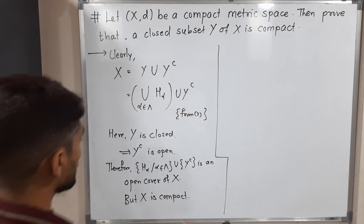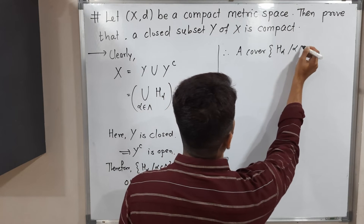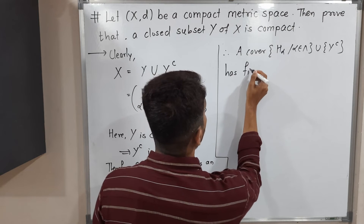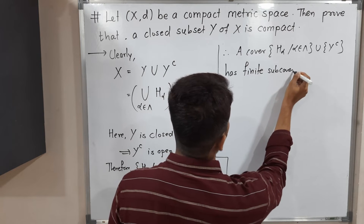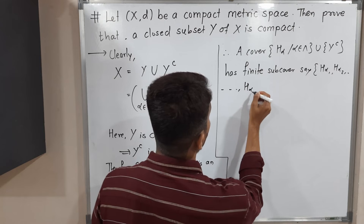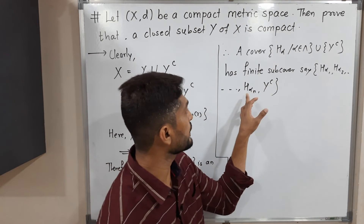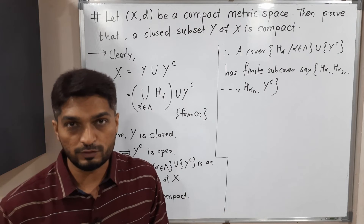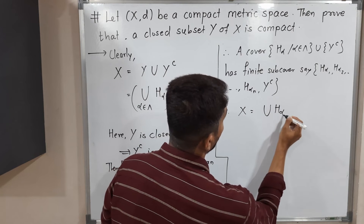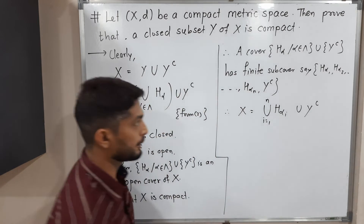Therefore, the cover {H_alpha : alpha in lambda} union {Y-complement} has a finite sub-cover. We will call it H_alpha_1, H_alpha_2, and so on up to H_alpha_n, along with Y-complement — so n+1 sets total which can cover X. Therefore X equals (union of H_alpha_i for i from 1 to n) union Y-complement.